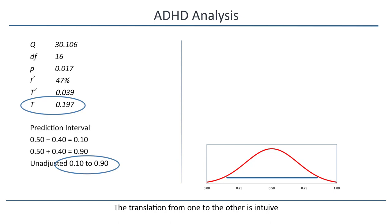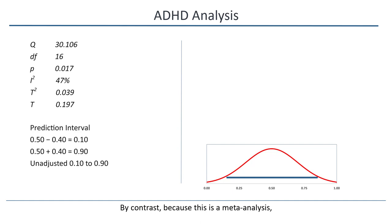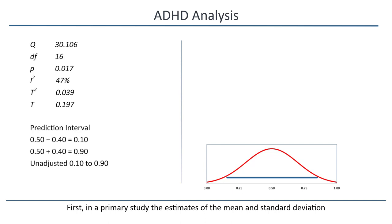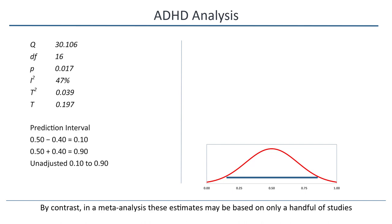The translation from one to the other is intuitive. By contrast, because this is a meta-analysis, we need to actually perform the computation and report the prediction interval. There are two reasons for that. First, in a primary study, the estimates of the mean and the standard deviation are typically based on a sample of 30 or more subjects and therefore are reasonably precise. By contrast, in a meta-analysis, these estimates may be based on only a handful of studies and therefore are less precise. When we compute the prediction interval, we adjust it to take account of that imprecision.